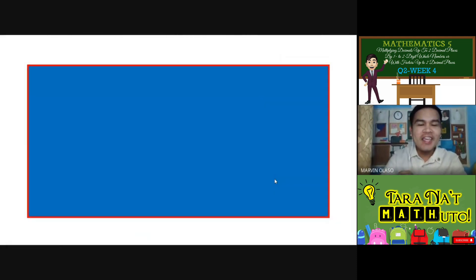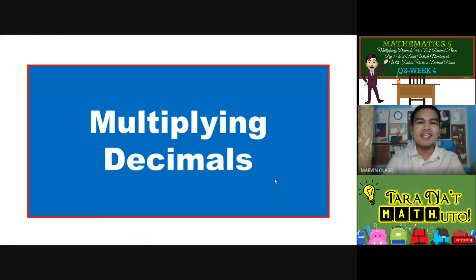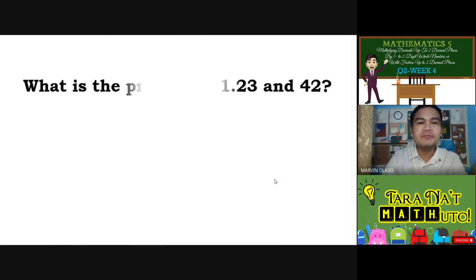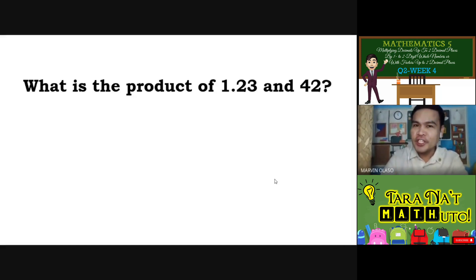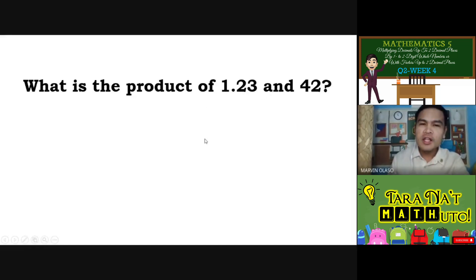We are multiplying decimals — decimals up to two decimal places by a factor of a whole number and another decimal with up to 2 decimal places. Let's have the first example. What is the product of 1 and 23 hundredths and 42? Almost the same as before. We now use the decimal number up to 2 decimal places. Let's have the multiplication: 1 and 23 hundredths times 42.